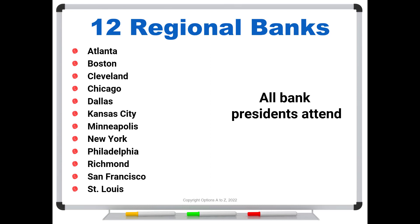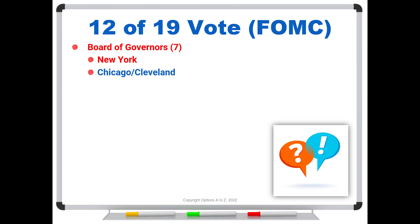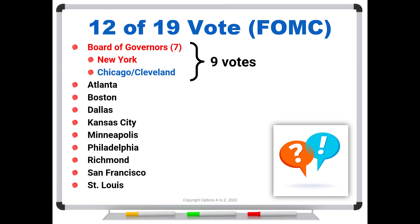But within these 12 regional banks, the New York bank president always votes. Cleveland and Chicago have alternating years — Cleveland votes one year, Chicago votes the next. When we talk about the FOMC meeting, it's really 12 of these 19 people who vote. For any given meeting, we have the Board of Governors — that's seven votes — plus the New York president makes eight, then we alternate between Chicago and Cleveland for nine votes. After that, we have nine remaining regional banks, and for any given year, these remaining nine alternate every third year.